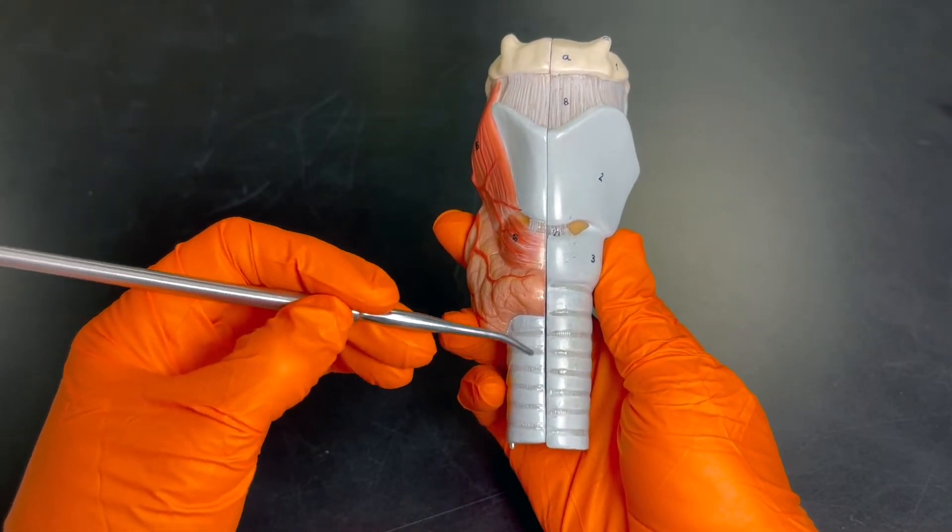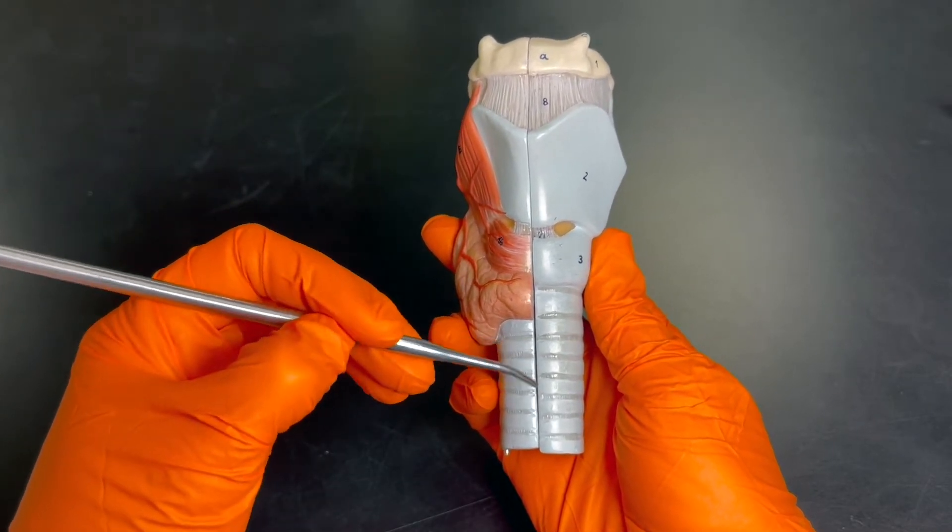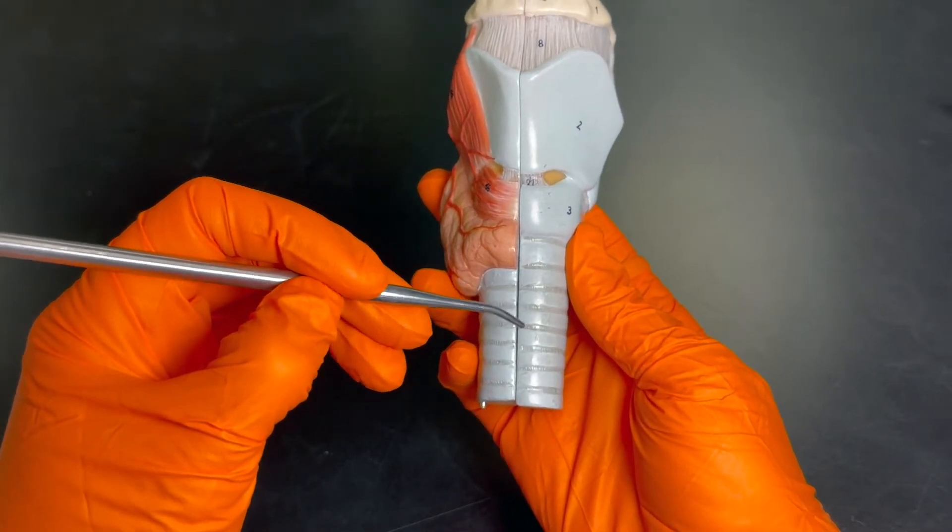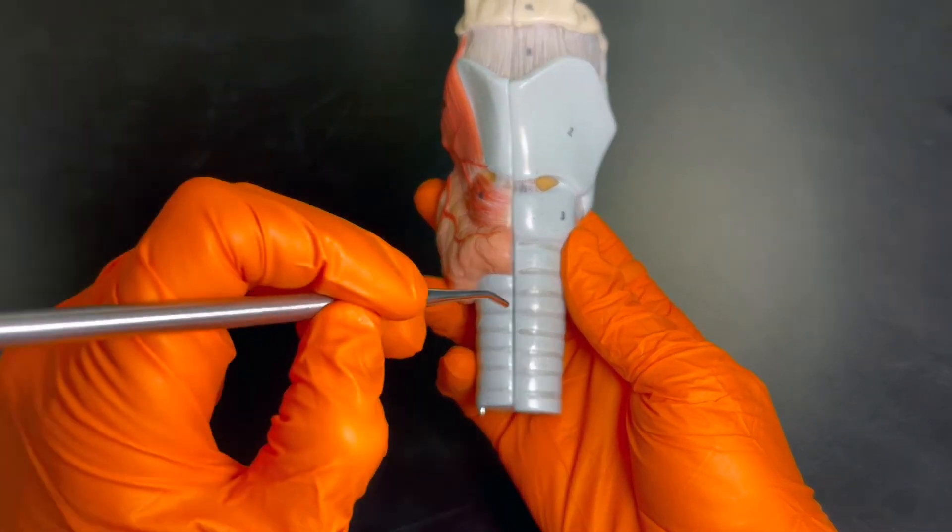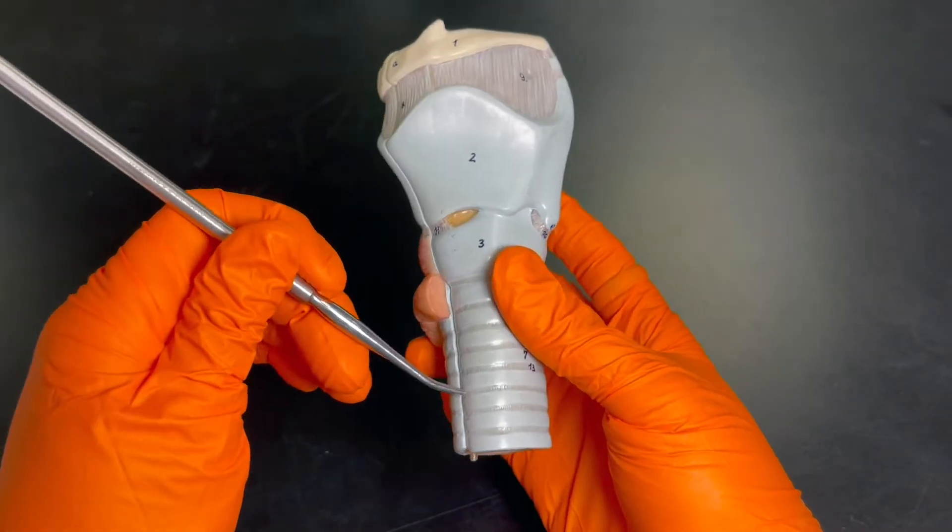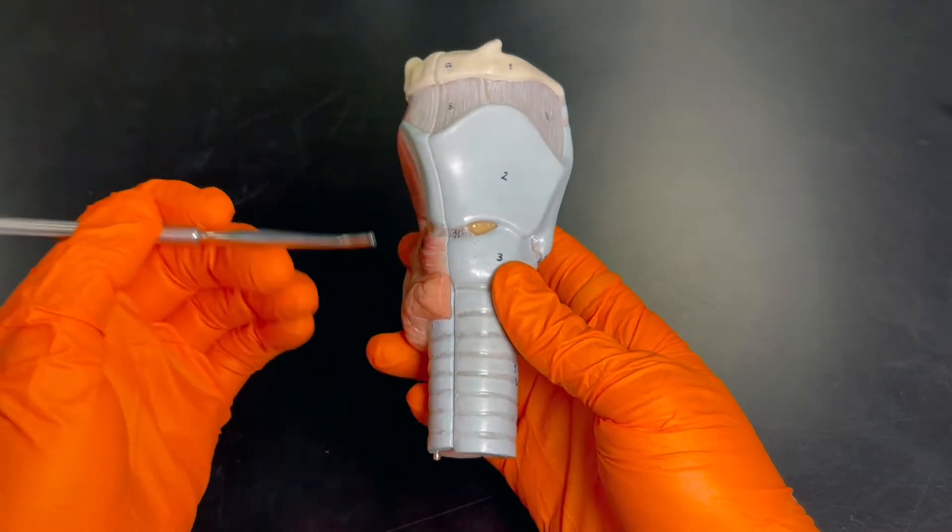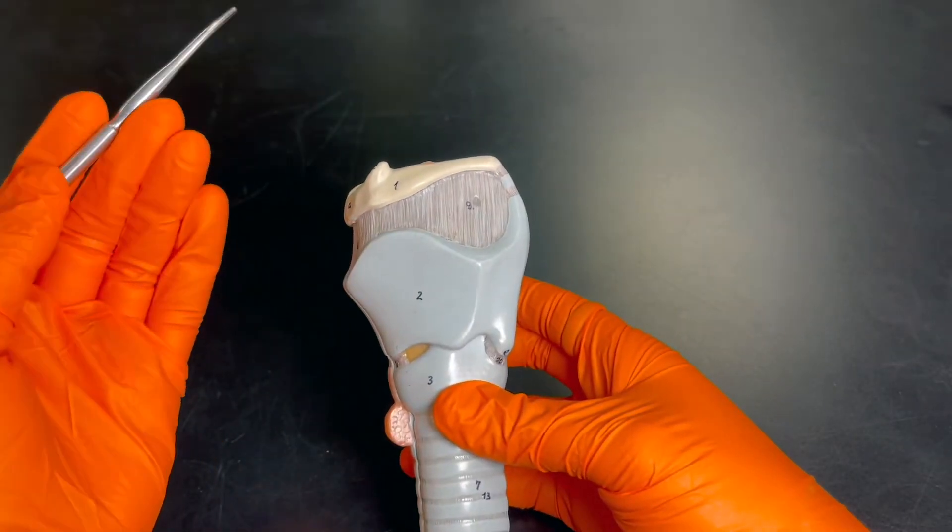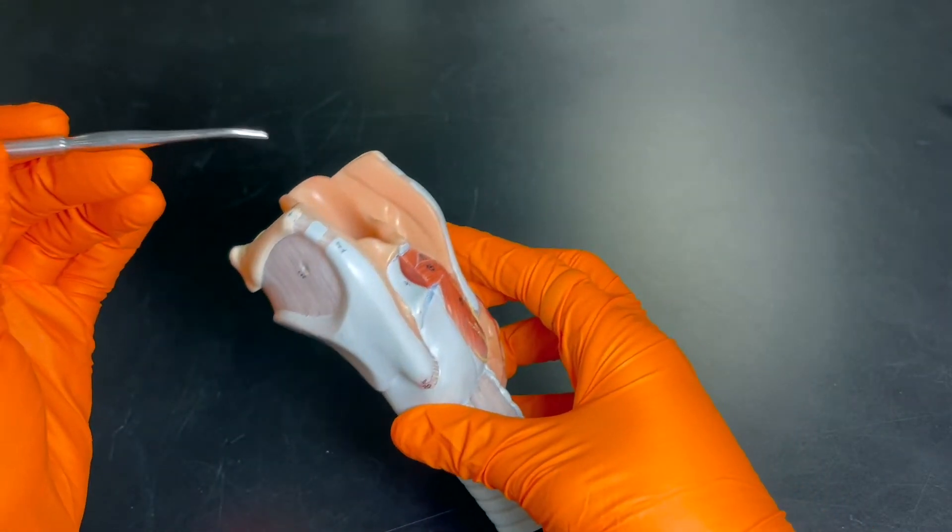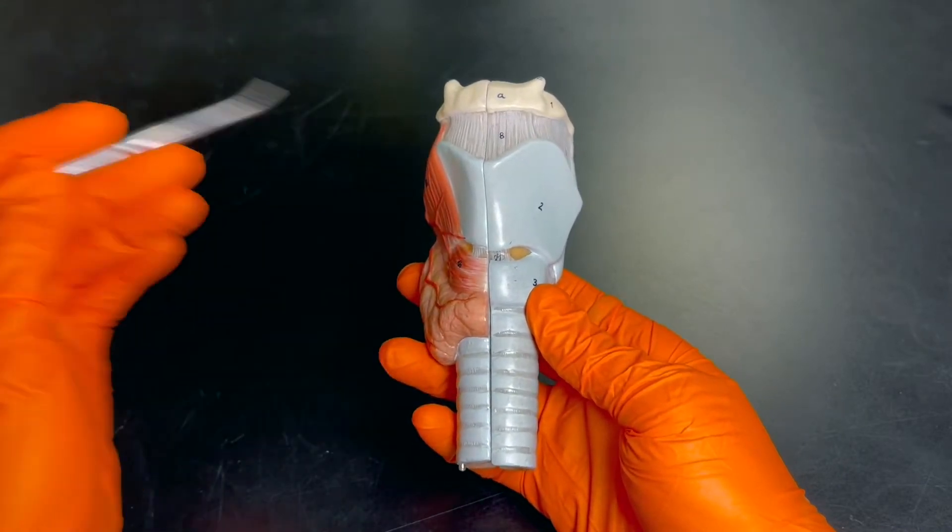Another procedure is called a tracheostomy, and that happens a little bit more inferiorly or lower, and that is when the healthcare provider will make an incision in the trachea and again put in a tube and a little covering, and then you have direct access to the lungs. So if there's some facial trauma or there is swelling and you can't get a tube through the mouth or the nose, those are two other options.